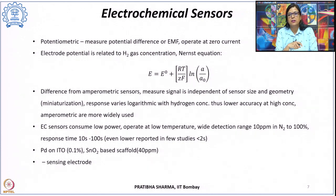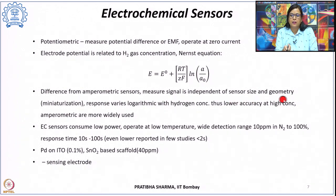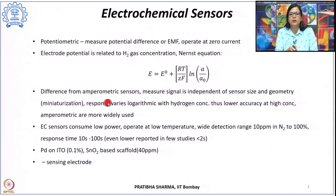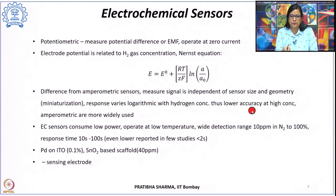A key difference between amperometric and potentiometric sensors is that the potentiometric signal is independent of sensor size and geometry, enabling miniaturization. However, the logarithmic relationship between electrode potential and hydrogen concentration means lower accuracy at higher concentrations. Amperometric sensors are therefore more widely used than potentiometric types.